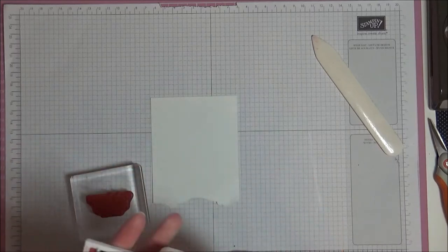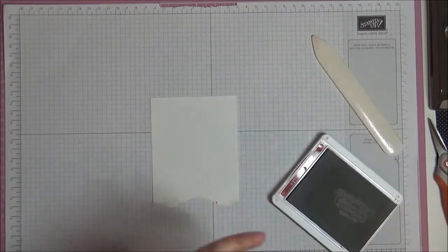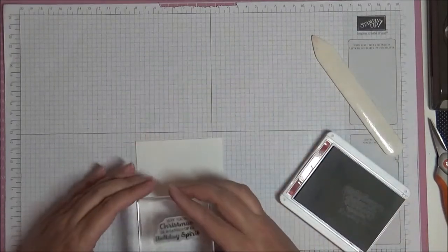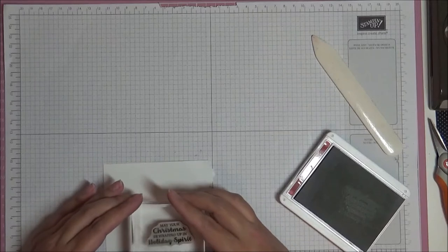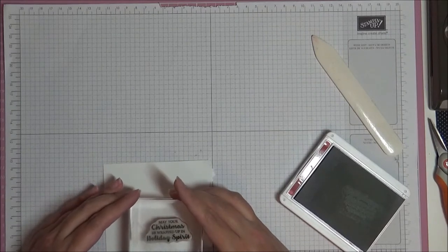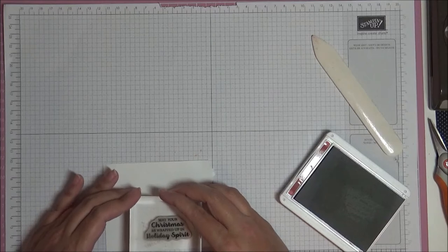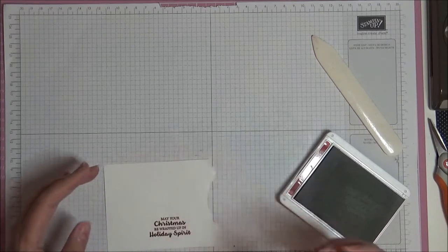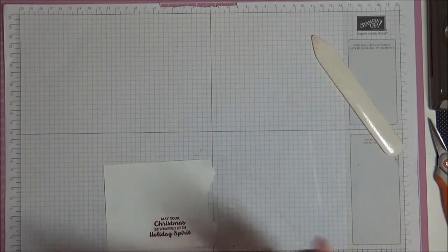So I'm using Cherry Cobbler ink and I'm just going to ink that up and stamp it. Try and use the straight edge, it'll be easier just cut it out. Lovely. Close up our ink pad.